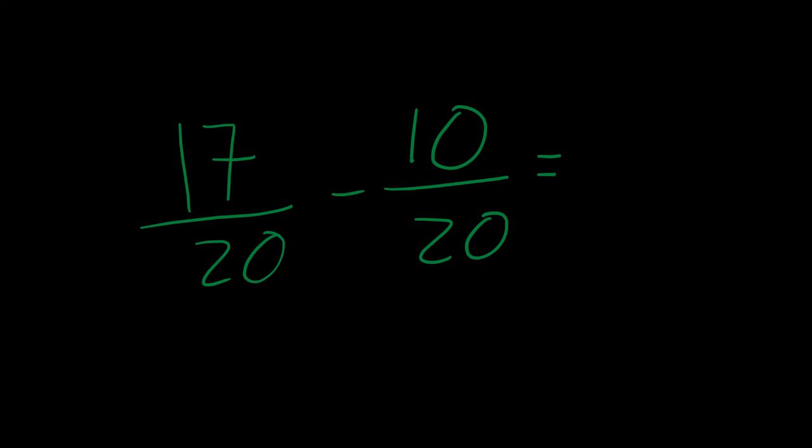In this example, we have 17 divided by 20 minus 10 divided by 20. Notice they both have a common denominator of 20, and therefore my answer would have a common denominator of 20. Now all I have to do is compute 17 minus 10, which is 7. Therefore, my answer will be 7 over 20.